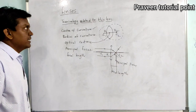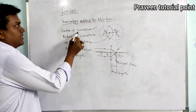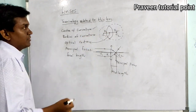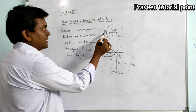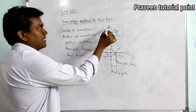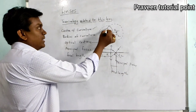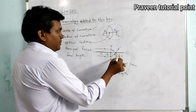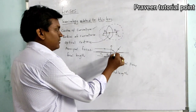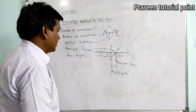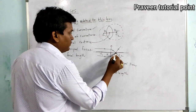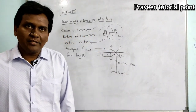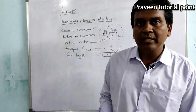So these are the terms related to thin lenses. The center of curvature is the center point of the imaginary sphere. Radius of curvature is the distance between the optical center and the center of curvature. Optical center is the middle point of the lens. Principal focus is the point through which all rays parallel to the principal axis pass after refraction. Focal length is the distance between the optical center and the principal focus.